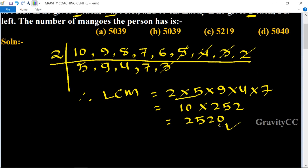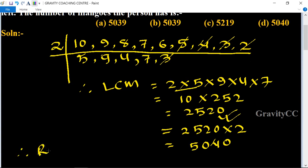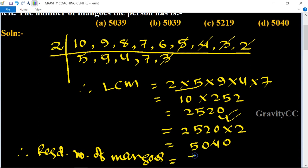The LCM is 2520, but this does not match the given options. So we multiply it by 2 to get 5040. The required number of mangoes equals LCM minus 1, since the difference between divisor and remainder is always 1. Therefore, the required number of mangoes equals 5040 minus 1, which is 5039. So 5039 is the correct answer.